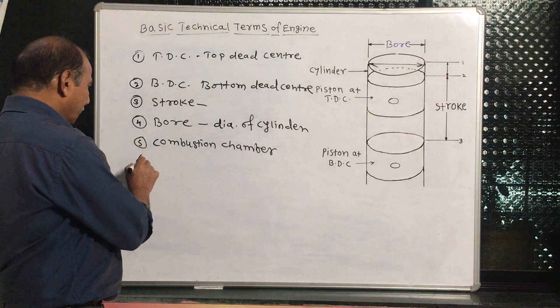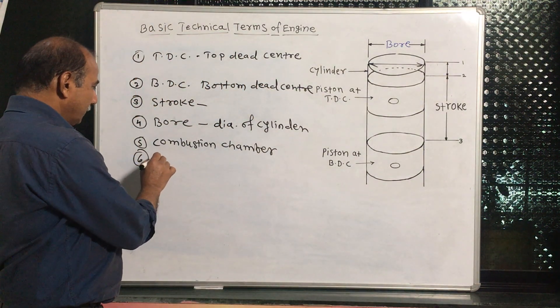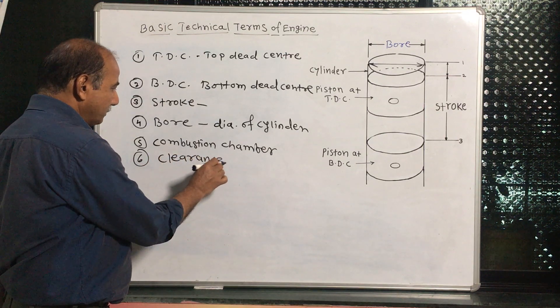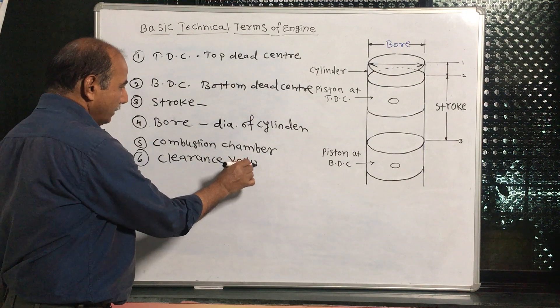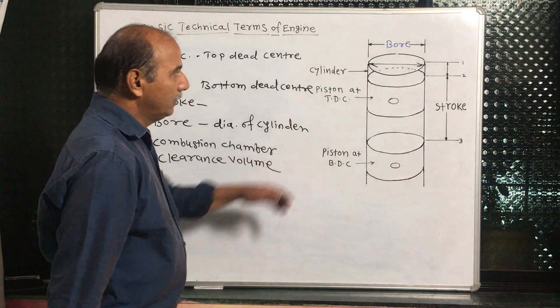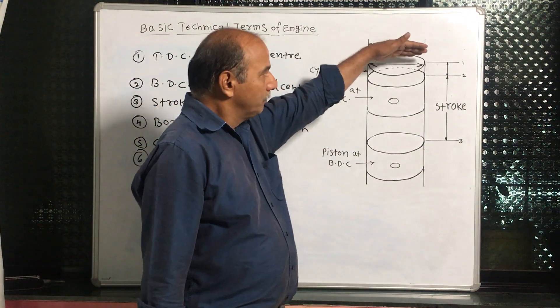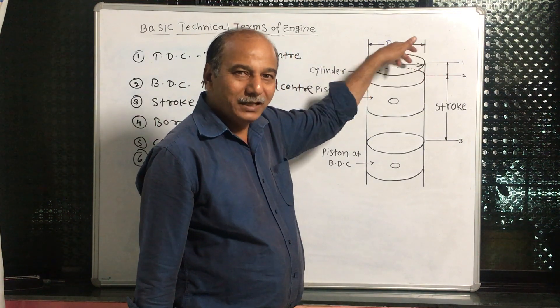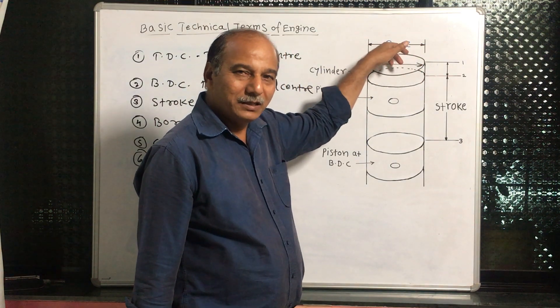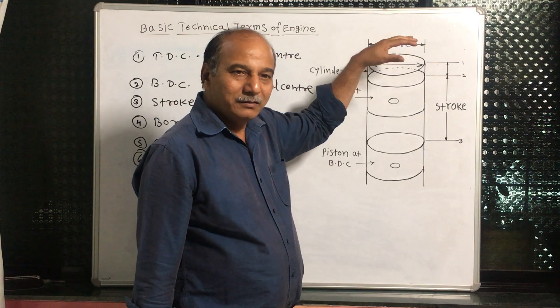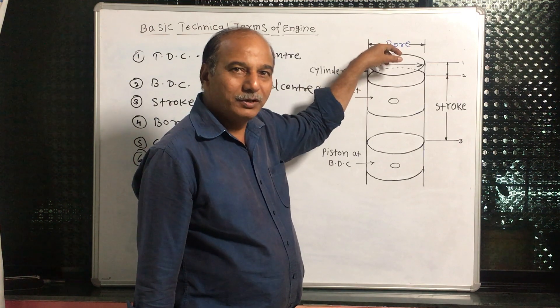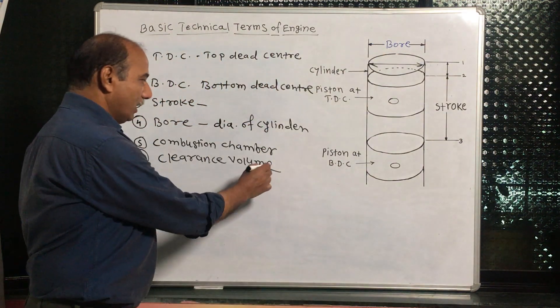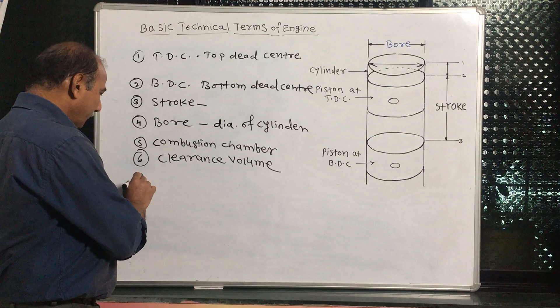Next one is the sixth one. Sixth one is the clearance volume. Clearance volume means between 1 and 2, some gap is there, some space is there, and that space is used for only combustion. That is called clearance volume.